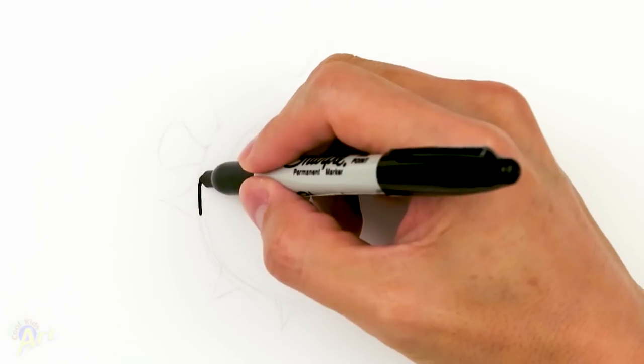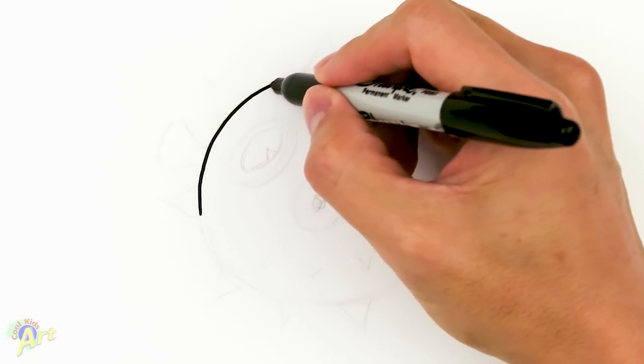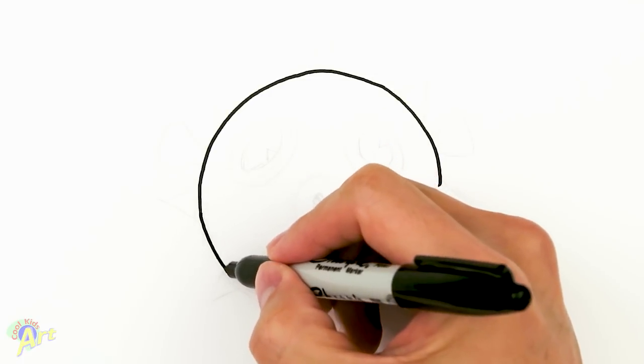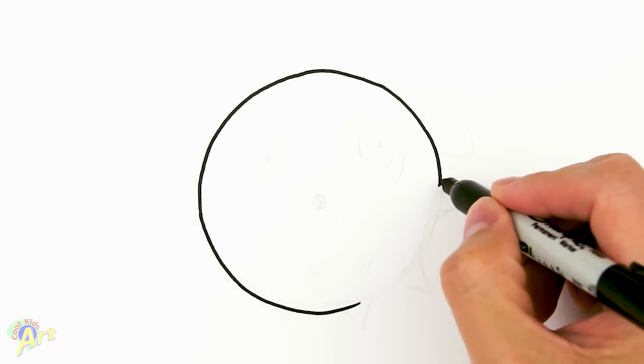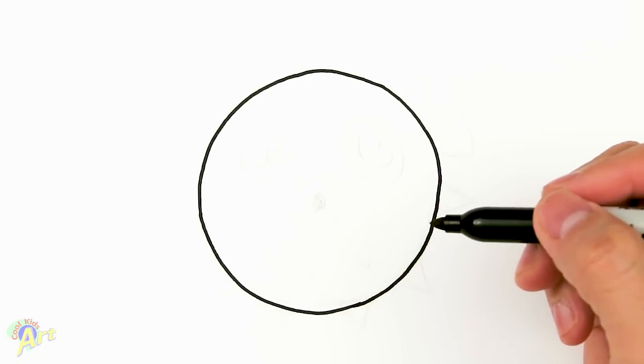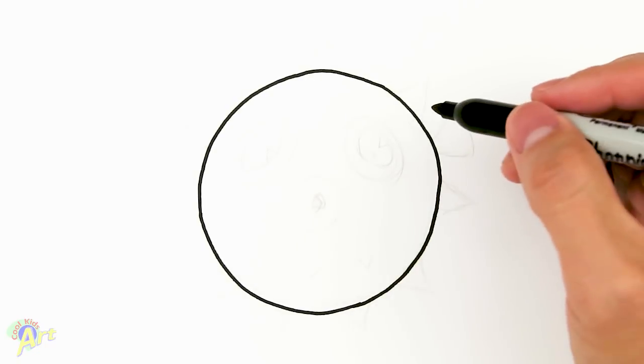We're going to start out with a circle this time, so as best as you can just draw a nice little circle. Okay, and then once we have the circle, now we can draw the eyes, which is going to be really easy.